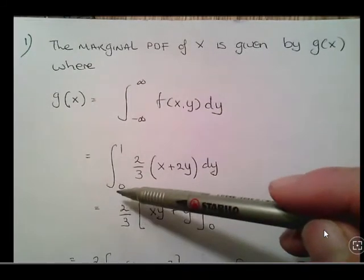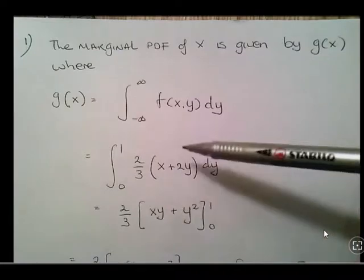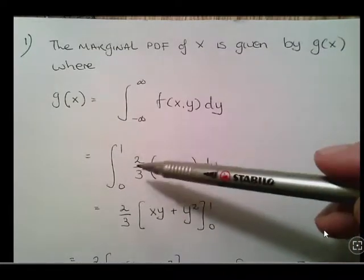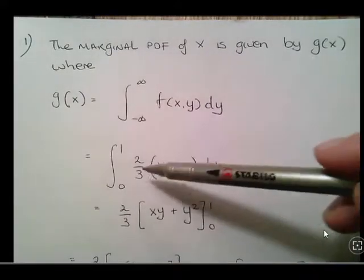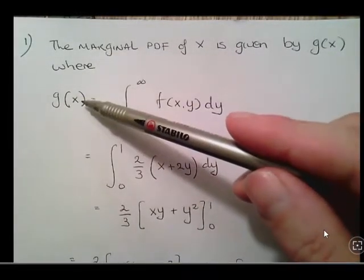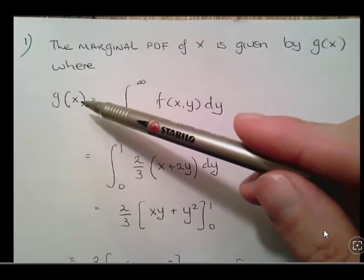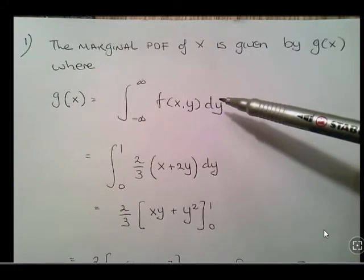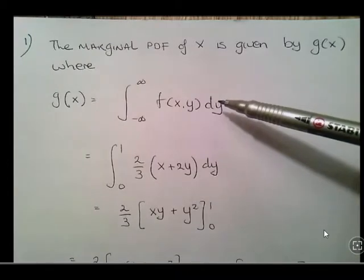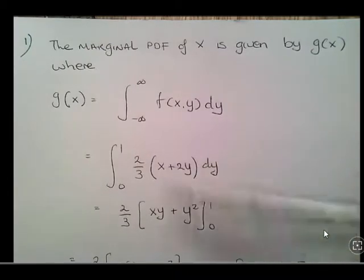The integral from minus infinity to 0 is 0, and from 1 to infinity is also 0, so you can ignore both those regions. When looking for the marginal PDF of x, we integrate with respect to y. And when looking for the marginal PDF of y, we'll integrate with respect to x.